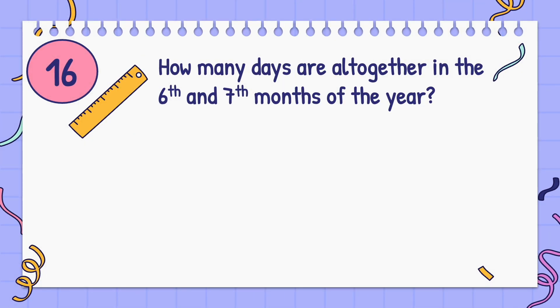How many days are altogether in the 6th and 7th months of the year? Answer: 61 days.